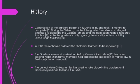Now we will talk about the history of Shalimar Gardens. The construction of the Shalimar Gardens began on 12th June 1641 and took 18 months to complete. During the Sikh era, much of the gardens' marble was removed and used to decorate the Golden Temple and the Rambagh Palace in nearby Amritsar, while the gardens' costly agate gate was stripped and sold by Lehna Singh Majithia.